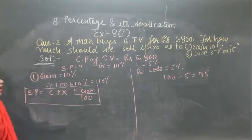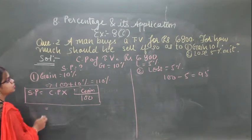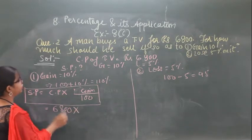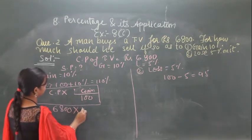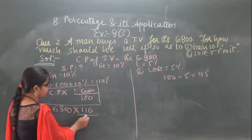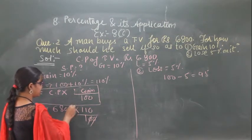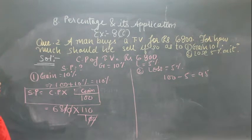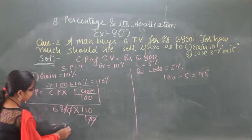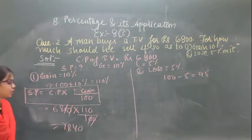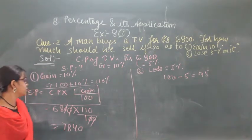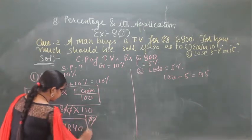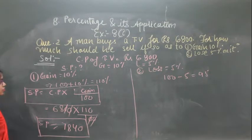The condition is: gain and cost price are given. So cost price is 6800 into gain of 110 upon 100. This zero and this zero get cancelled. On solving this, the answer you will get is 7840. So the selling price is rupees 7840 when you get a gain of 10%.